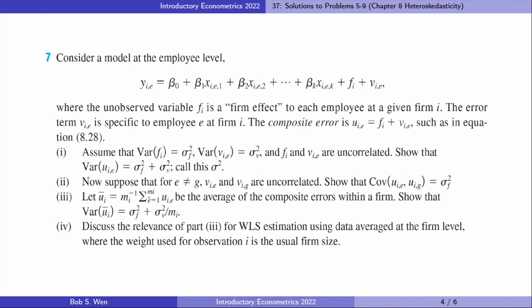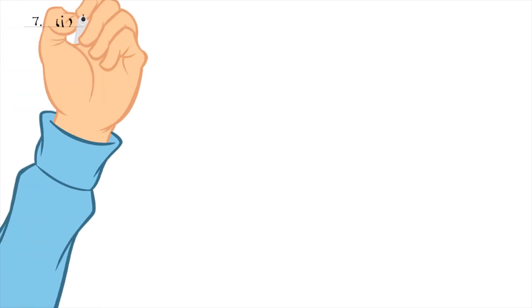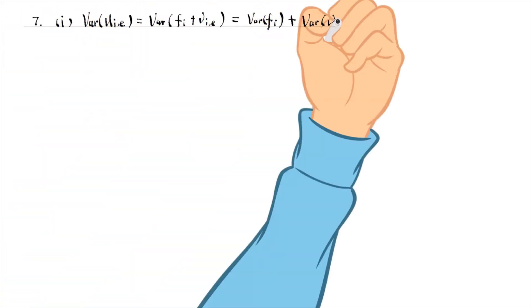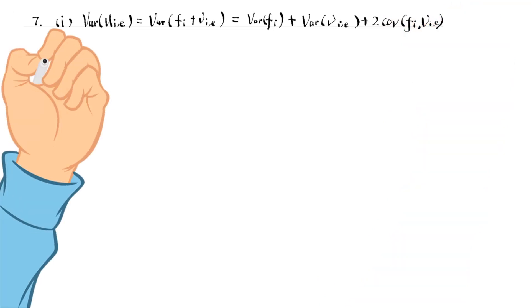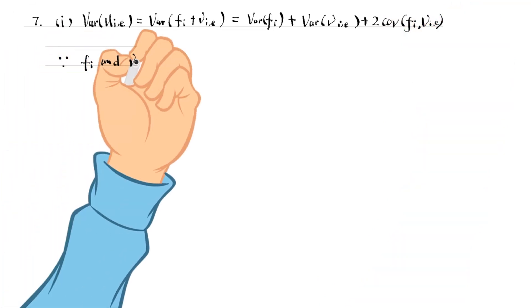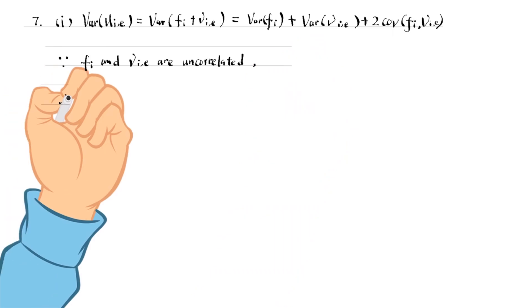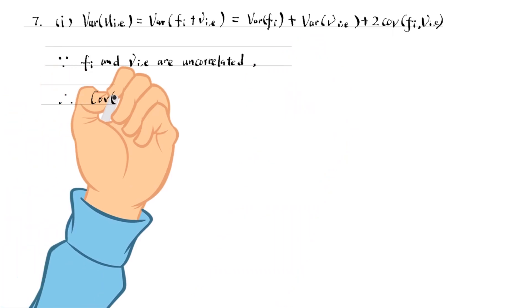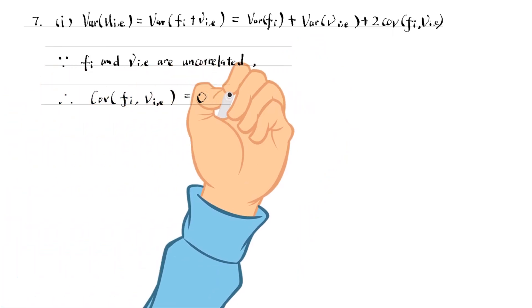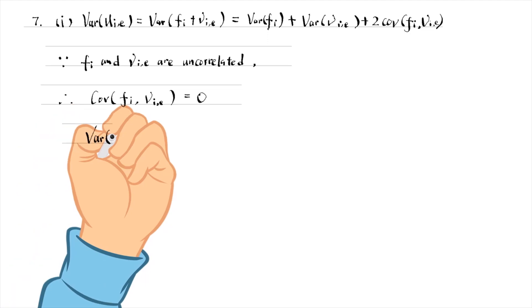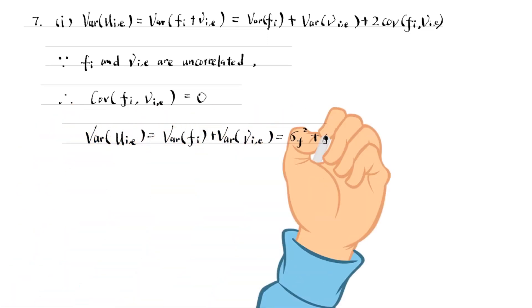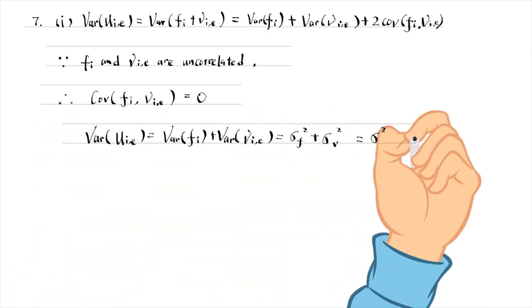Let's solve problem 7. We can write the variance of the composite error into three terms. Since f_i and nu_i are uncorrelated, the covariance between them is zero. Then the variance of the composite error mu is the sum of sigma-f-squared and sigma-nu-squared.